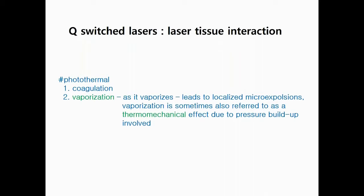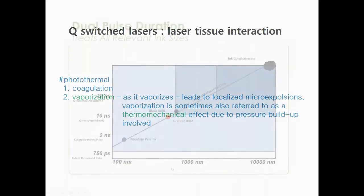Coagulation occurs with thermal heating of the tissue — when it is gradually heated, we can have coagulation. Vaporization occurs with an abrupt rise of temperature within the tissue.